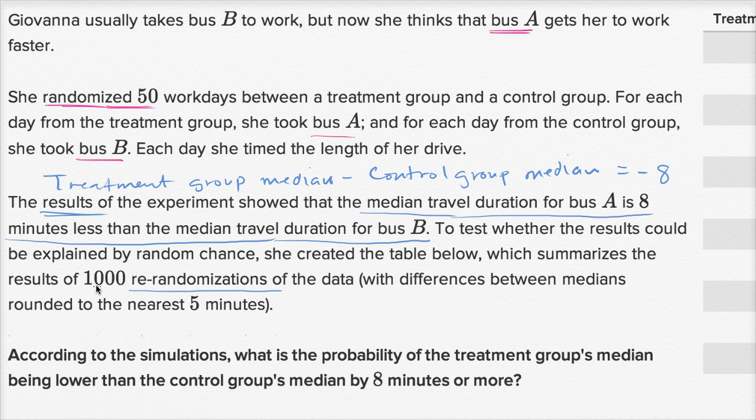So what she's doing here is she re-randomized the data, and she wants to see with all this re-randomized data, out of these 1,000 re-randomizations, what fraction of them do I get a result like this? Do I get a result where A is eight minutes or more faster, or you could say that the median travel duration for bus A is eight minutes less or even less than that than the median travel for bus B? So if it was nine minutes less, or 10 minutes less, or 15 minutes less, those are all the interesting ones. Those are the ones that confirm our hypothesis that bus A gets to work faster.